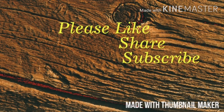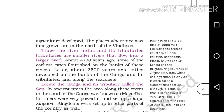Welcome back. Let's go through the remaining portions of this chapter. Trace the River Indus and its tributaries — tributaries are smaller rivers that flow into a larger river. About 4700 years ago, some of the earliest cities flourished on the banks of these rivers. Later, about 2500 years ago, cities developed on the banks of the Ganga and its tributaries and along the sea coast. Now, coming to the life of people at the banks of River Indus and its tributaries.